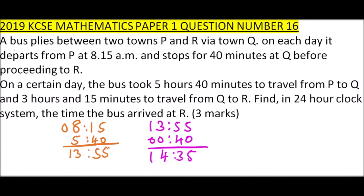So to get to town R it took 3 hours 15 minutes. So this is now 14:35. You add 3 hours and 15 minutes.